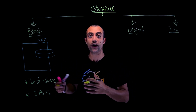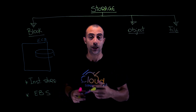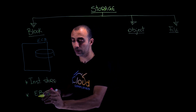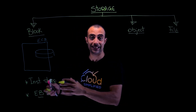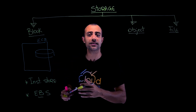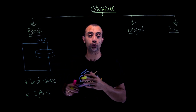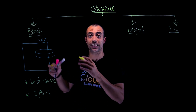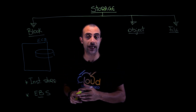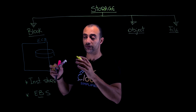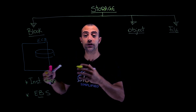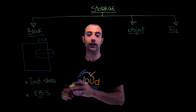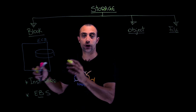But where do I store my operating system, or data that I want to persist? That's where EBS, or Elastic Block Store, comes in. EBS is like the hard disk attached to your EC2 instance — this is where you can store your operating system because the data inside EBS is persistent. If I stop or reload my EC2 instance, the data remains. That's the first type of storage: Block Storage.